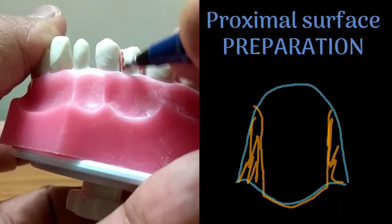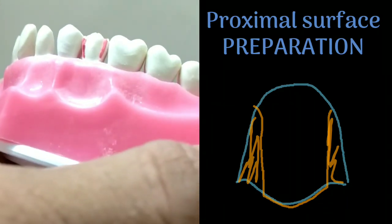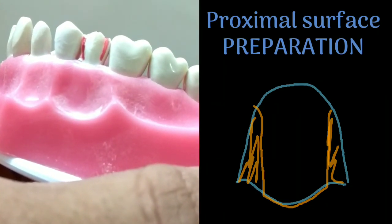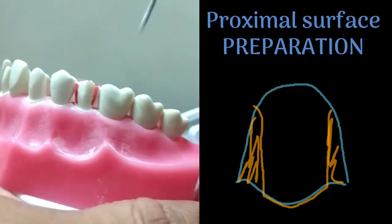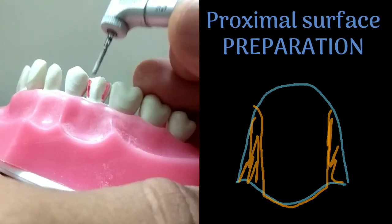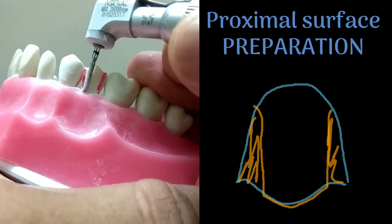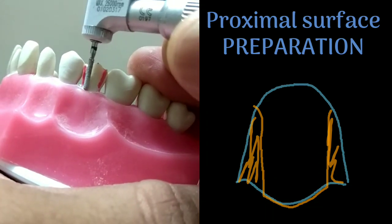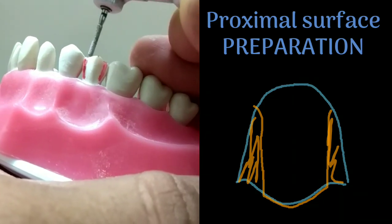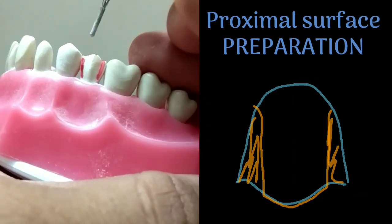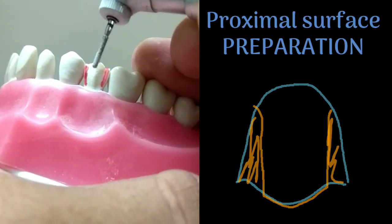Now we start proximal surface reduction — both distal and mesial. Think of a premolar as a canine with a palatal cusp. For the mesial proximal surface, keep the bur touching the bottom of the finish line and slowly move it upward, repeating multiple times until you break through the contact and reach the palatal side.